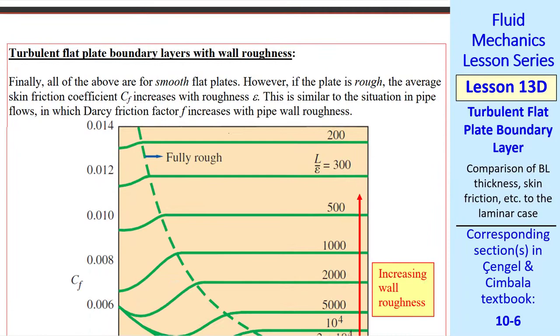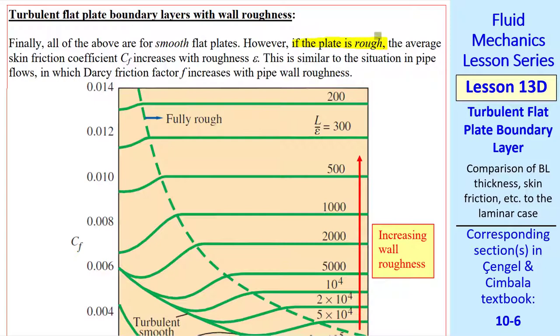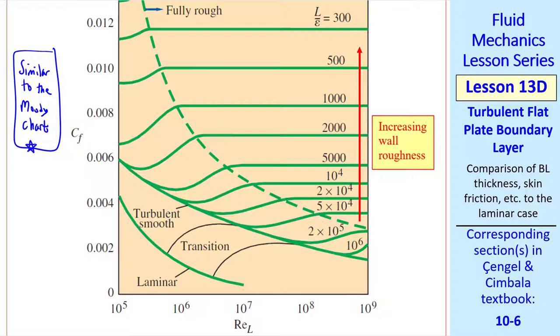Now I consider what happens when we add wall roughness. As we saw with pipe flows in a previous lesson, when the plate is rough, average skin friction coefficient CF increases with roughness epsilon. Here's a plot from our textbook. This is similar to the Moody chart, but it's for flat plate boundary layers. And the turbulent flow curves look somewhat similar, where we have the totally smooth curve. And as we increase roughness, these curves veer off and give a higher CF. One big difference here is that though this is increasing wall roughness as it was with the Moody chart, here we plot curves of constant L over epsilon, whereas in the Moody chart we used epsilon over D. Since this is kind of upside down compared to this, these values are decreasing instead of increasing. Notice also the fully rough region beyond which these curves flatten out. We saw a similar thing with pipe flow and the Moody chart.